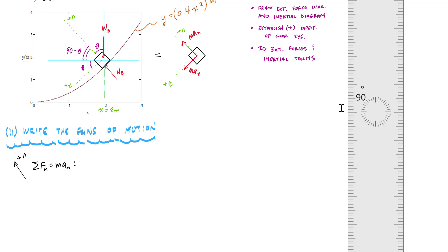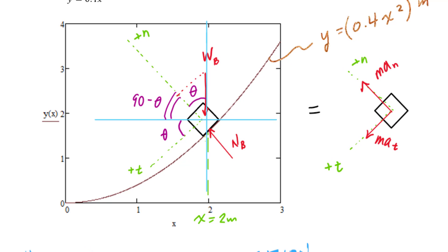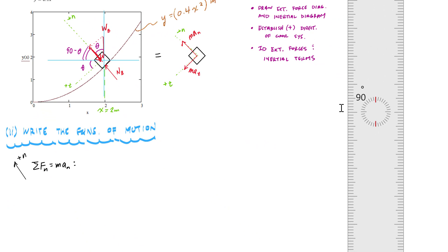I'll break up W_B into its components in the normal and tangential directions. In the normal direction equation, I have negative W_B cosine theta, plus the normal force N_B, equals the inertial term M·A_N. I think those are all the external forces, and that is my equation of motion in the normal direction.